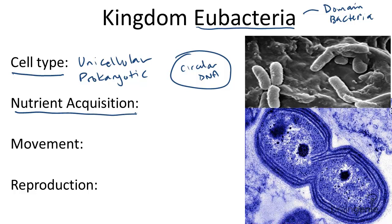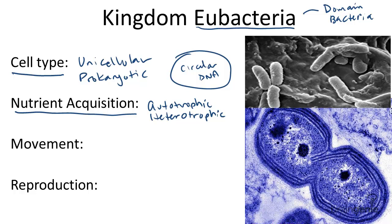How do prokaryotic cells, like those in the eubacteria kingdom, acquire nutrients? Well, they can be either autotrophic or heterotrophic, meaning they can get their energy from a variety of sources or produce their own from use of the sun or other nutrients.